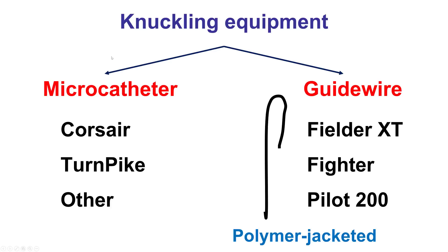To knuckle, one needs two things: a microcatheter that provides the support necessary for creating and advancing the knuckle and also for exchanging for another guide wire, and a polymer-jacketed guide wire. The most commonly used are the Fielder XT, the Fighter, and the Pilot 200. The Fielder XT and the Fighter form tighter knuckles because they are softer, whereas the Pilot forms slightly larger knuckles.